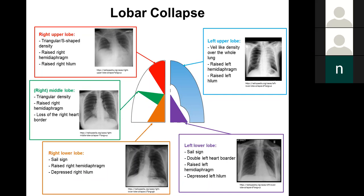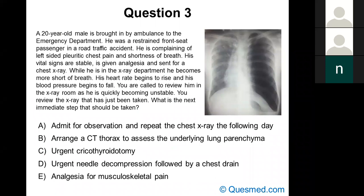If you can remember these patterns, it'll be very easy when you're presented with one of these chest x-rays in either an SBA or an OSCE to come up with the right answer. Question three: a 20-year-old male is brought in by ambulance after being a restrained front seat passenger in a road traffic accident. He is complaining of left-sided pleuritic chest pain and shortness of breath. His vital signs are stable; he is given analgesia and sent for a chest x-ray.